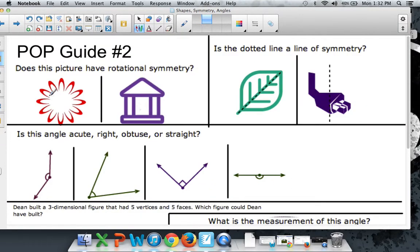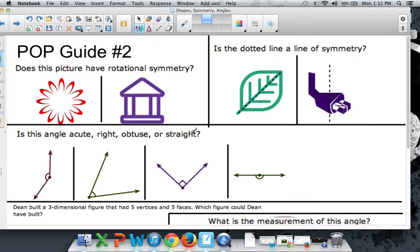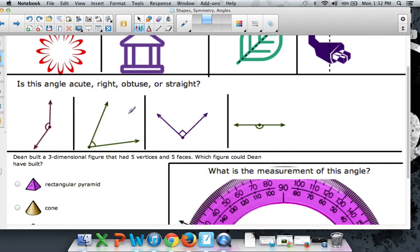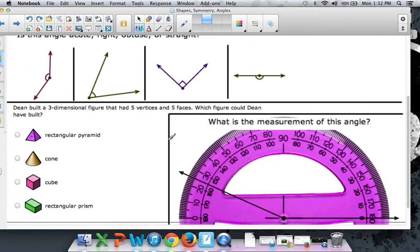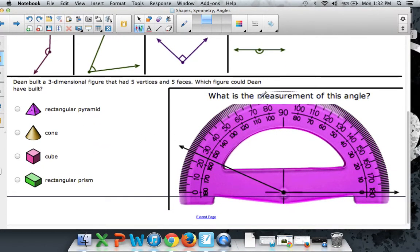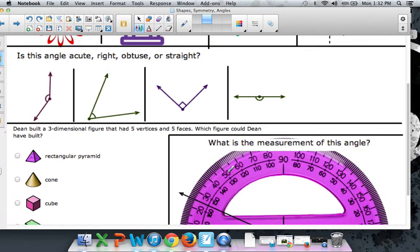Does this picture have rotational symmetry? This one right here. Is that line a line of symmetry? That dotted line, is it a line of symmetry? This dotted line, is it a line of symmetry? Is this angle acute, right, obtuse, or straight? You tell me. There are four angles here. They're all different. Which one's acute, which one's right, which one's obtuse, and which one's straight? A riddle kind of that describes one of these shapes. You tell me which shape it's describing. And on your own, what is the measurement of this angle? Remember the three steps. Remember the three steps.